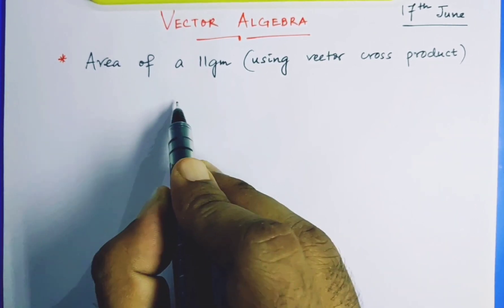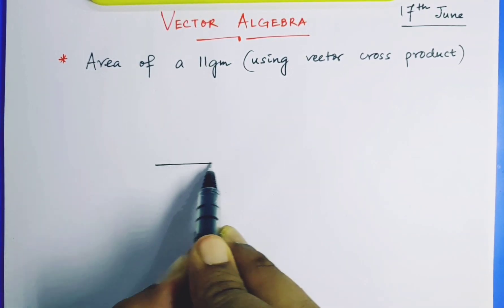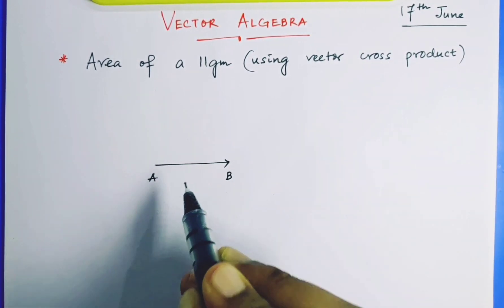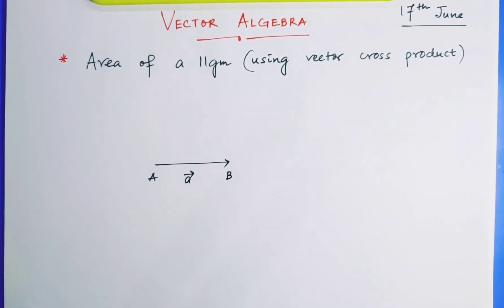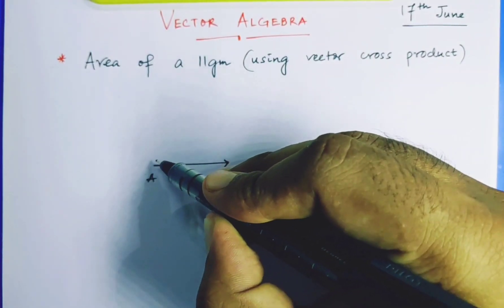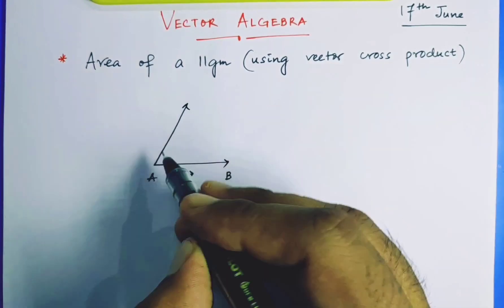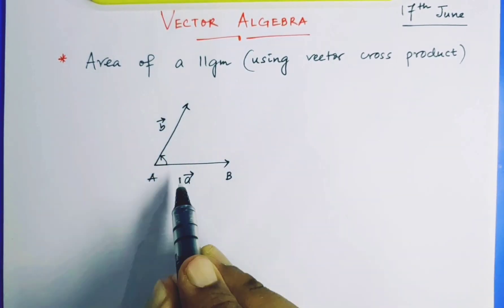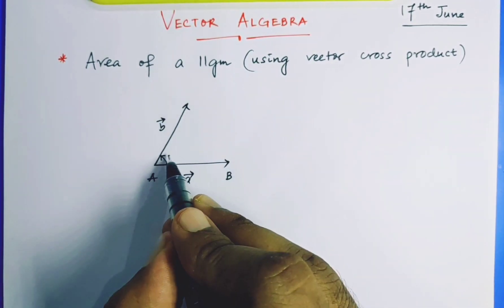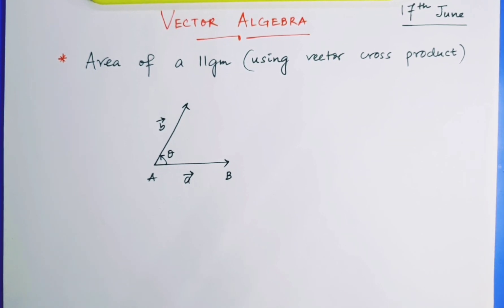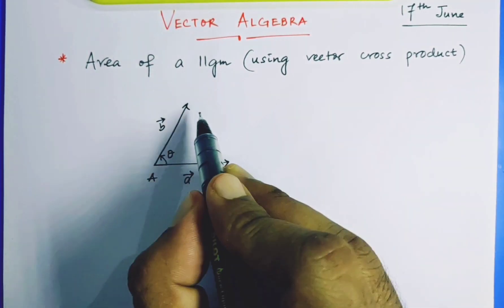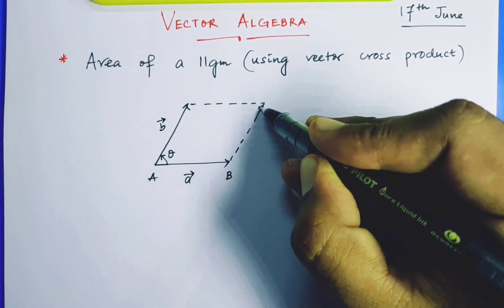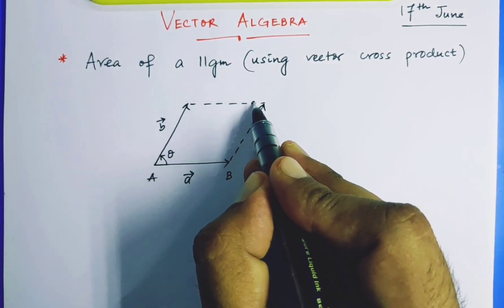Suppose we have a parallelogram. This is side AB, the vector is A vector. And the other vector which we have is B vector. And this A vector and B vector makes an angle theta between themselves. Now what we see, since it's a parallelogram, opposite sides are parallel.